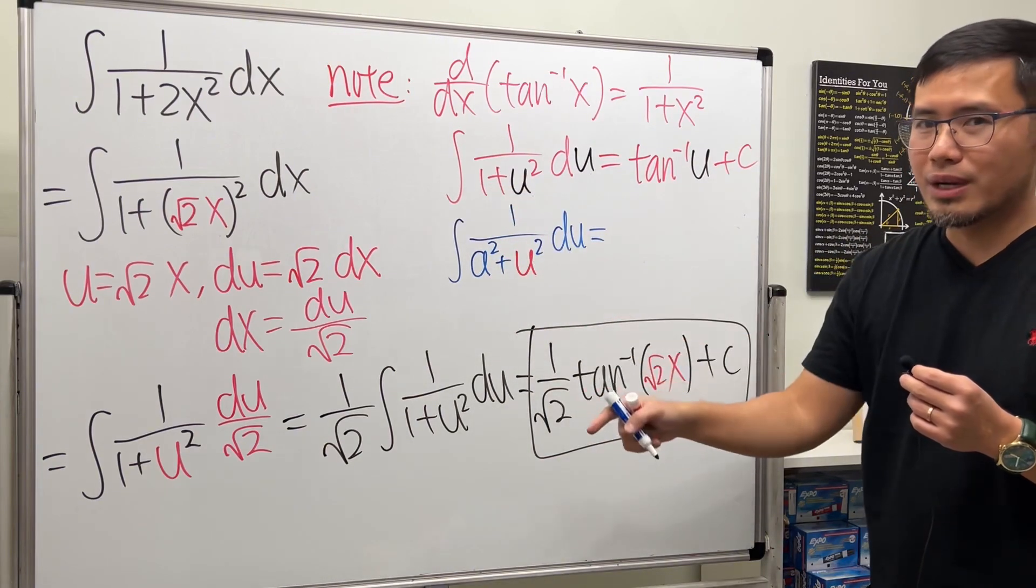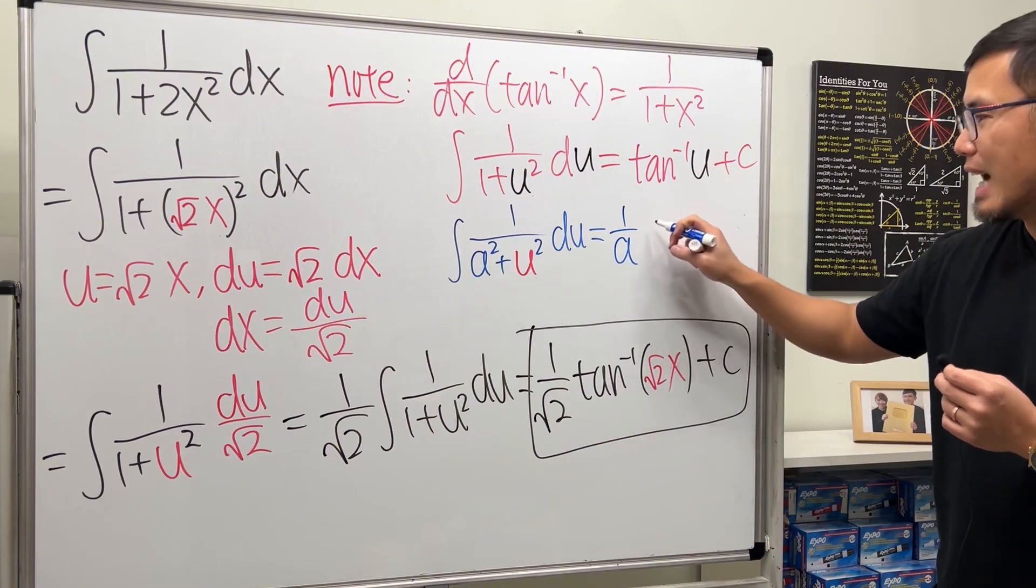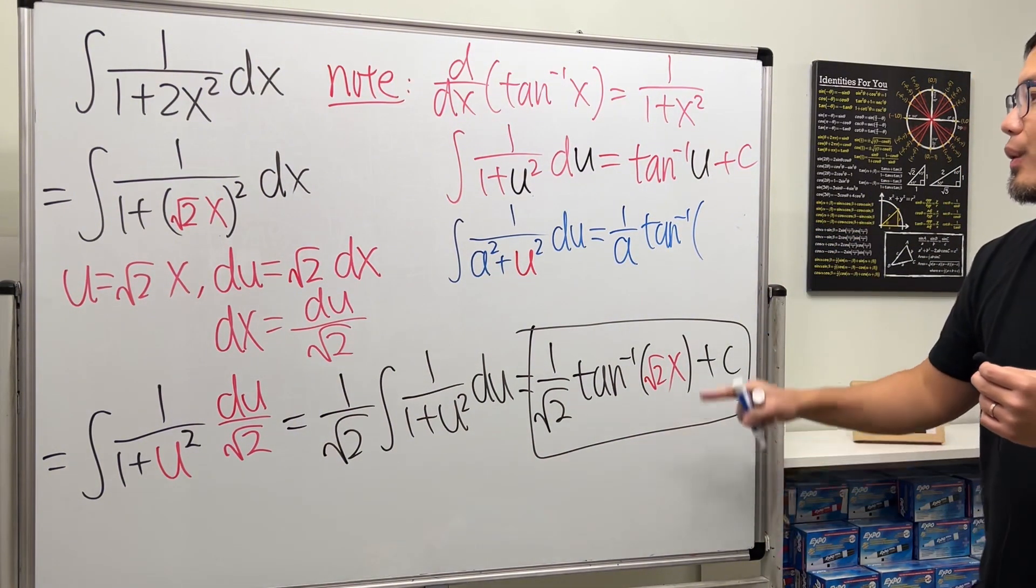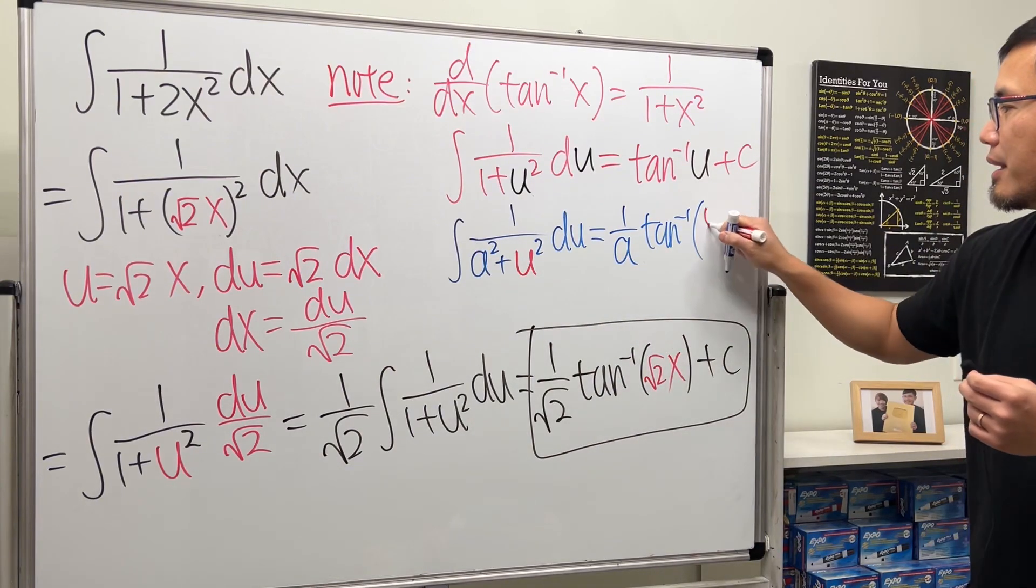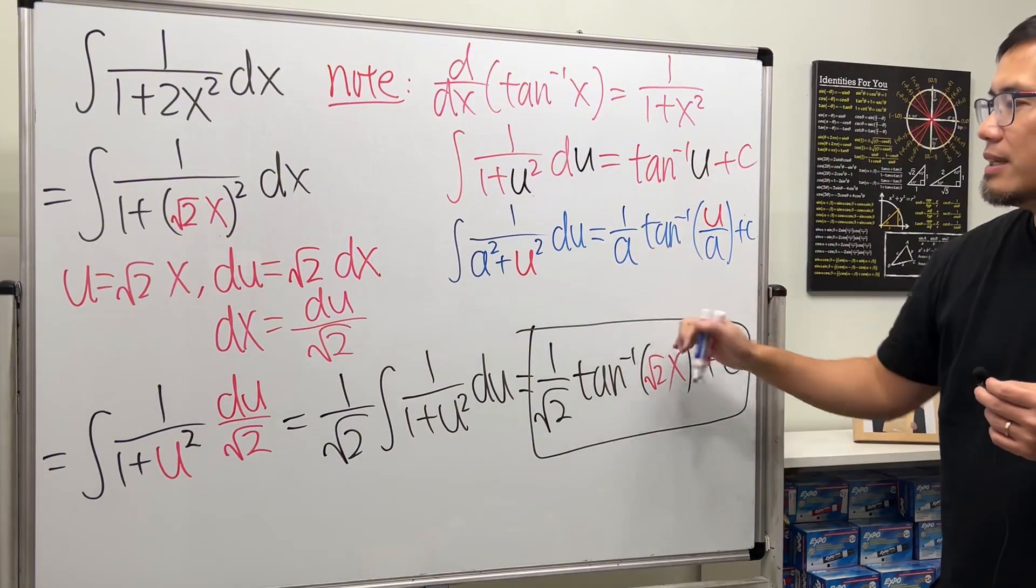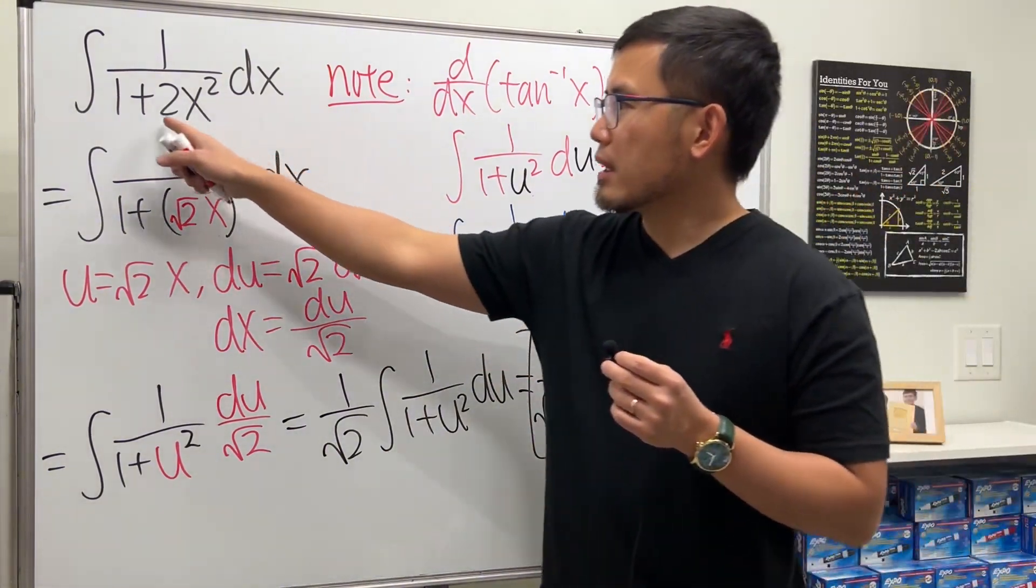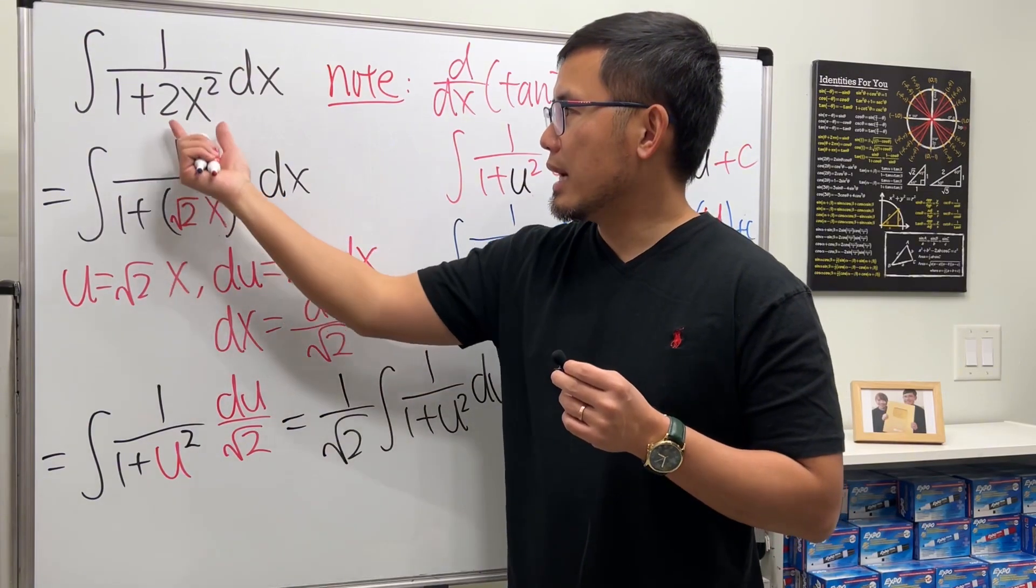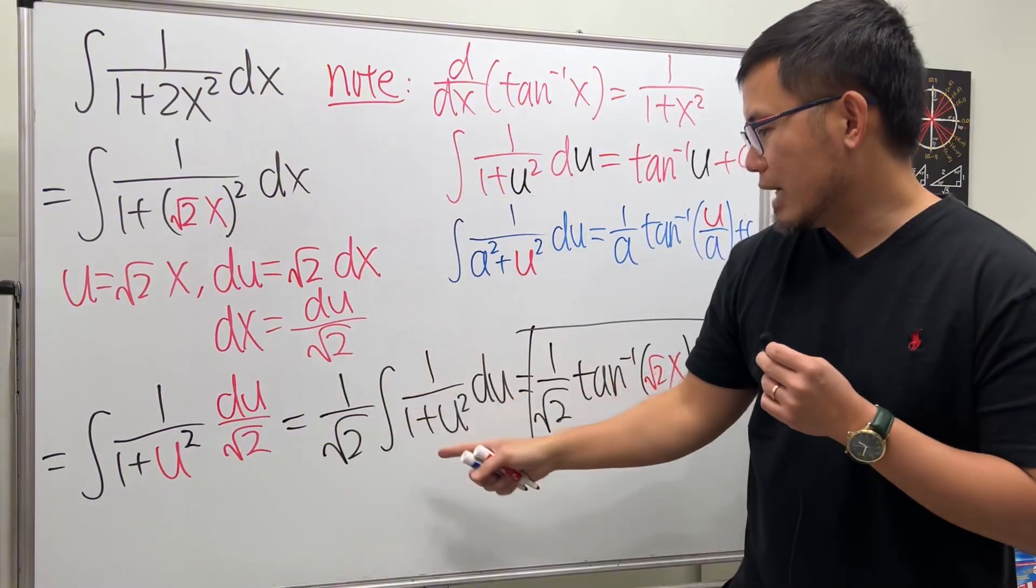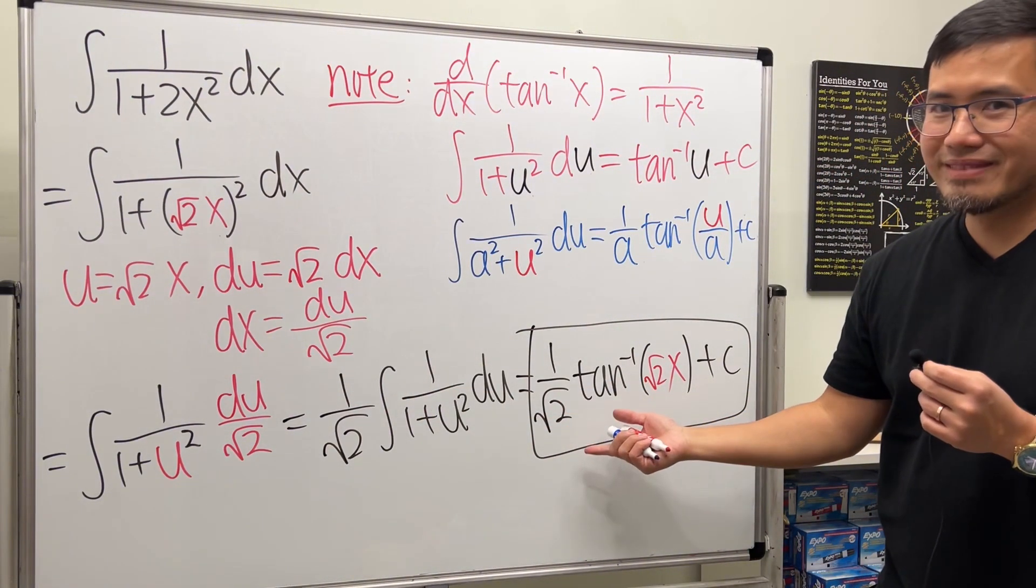When we have a squared instead of 1, the answer is 1 over a times inverse tangent of u over a plus c. That's the formula. If you have a constant multiple, make sure you put that inside and square it. You have to divide by the number on the outside. That's pretty much it.